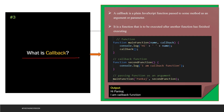The next question says: what is a callback in JavaScript? A callback is a plain JavaScript function passed to some method as an argument. It is a function that is to be executed after another function has finished executing. Let's see the example. So here this is my main function, and inside the main function this is your callback parameter. In place of callback, you can pass the function name. This is your first function which is the main function, and this is your callback function. I'm calling this main function and passing the parameter "Pankaj" as the name, and I'm passing the second function as the callback parameter.